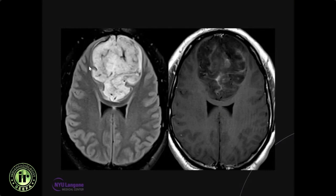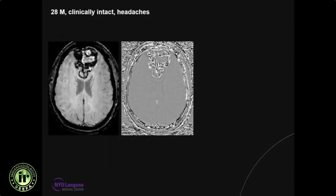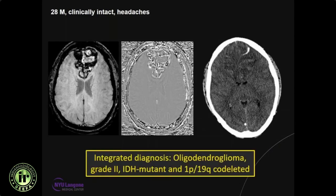Moving on to IDH-mutated gliomas — this example shows a well-defined bifrontal large mass without significant edema. The important thing is this is a younger patient, a 28-year-old male who is clinically intact — only headaches, no real neurological deficit. SWI imaging shows the tumor is partially calcified, confirmed on CT scan. It turns out this is an oligodendroglioma, grade 2, IDH mutated, and most importantly 1p19q co-deleted — hence the integrated diagnosis of a molecular oligodendroglioma.